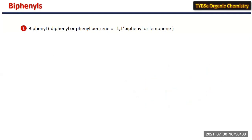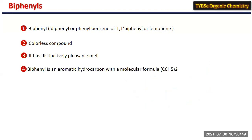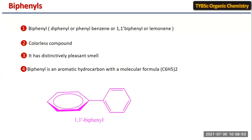The biphenyl compound is a colorless aromatic hydrocarbon with a molecular formula C6H5 twice. You can see here there are two rings joined with a single bond. Each ring contains six carbon atoms and five hydrogen atoms.